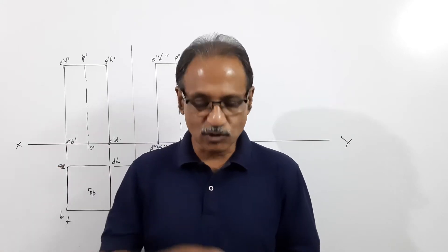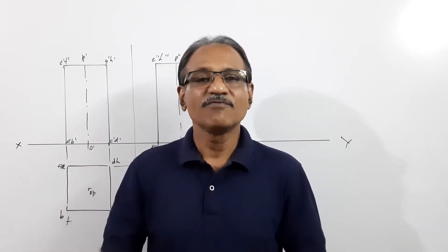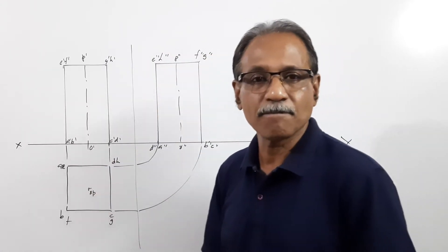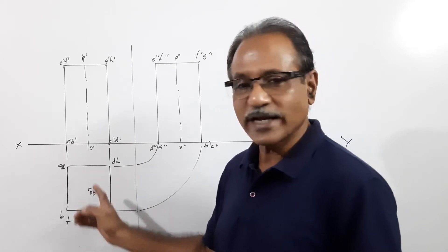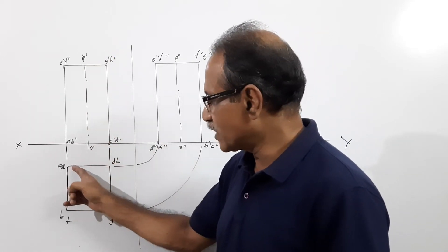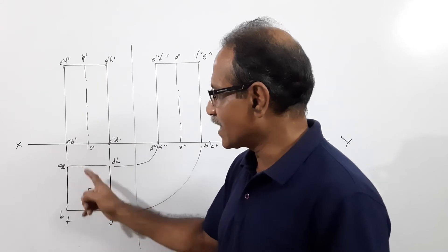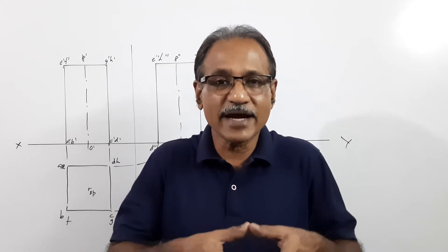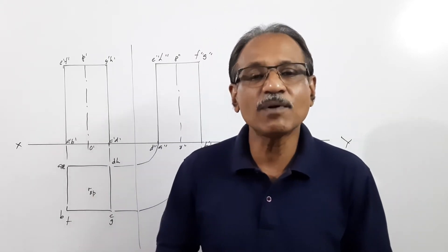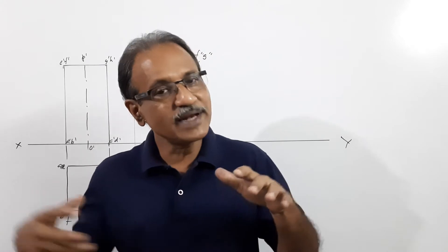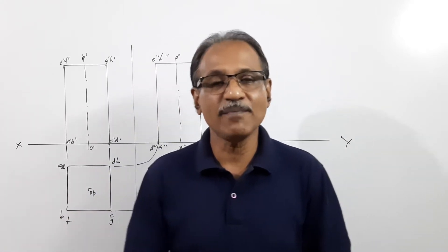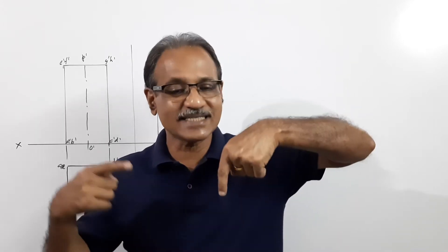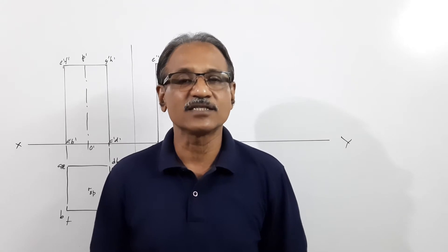The square prism stands on HP on its base with a side of base parallel to TVP. This is the plan, elevation, and end view. The prism is penetrated by a horizontal cylinder of 50 mm diameter, with its axis parallel to both planes, so that the two axes bisect each other at right angles.